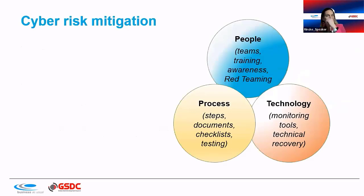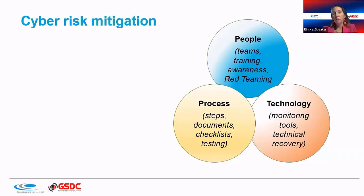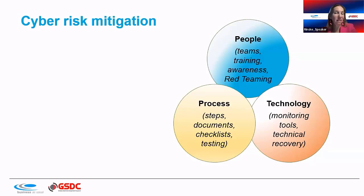Cyber risk mitigation needs to cover people, process, and technology — not just technology. Processes should include quick reference guides, playbooks, and checklists. For people, consider what teams are needed, training and awareness programs, and red teaming — where internal staff attempt to identify and exploit their own vulnerabilities to find the most exposed points in your processes.